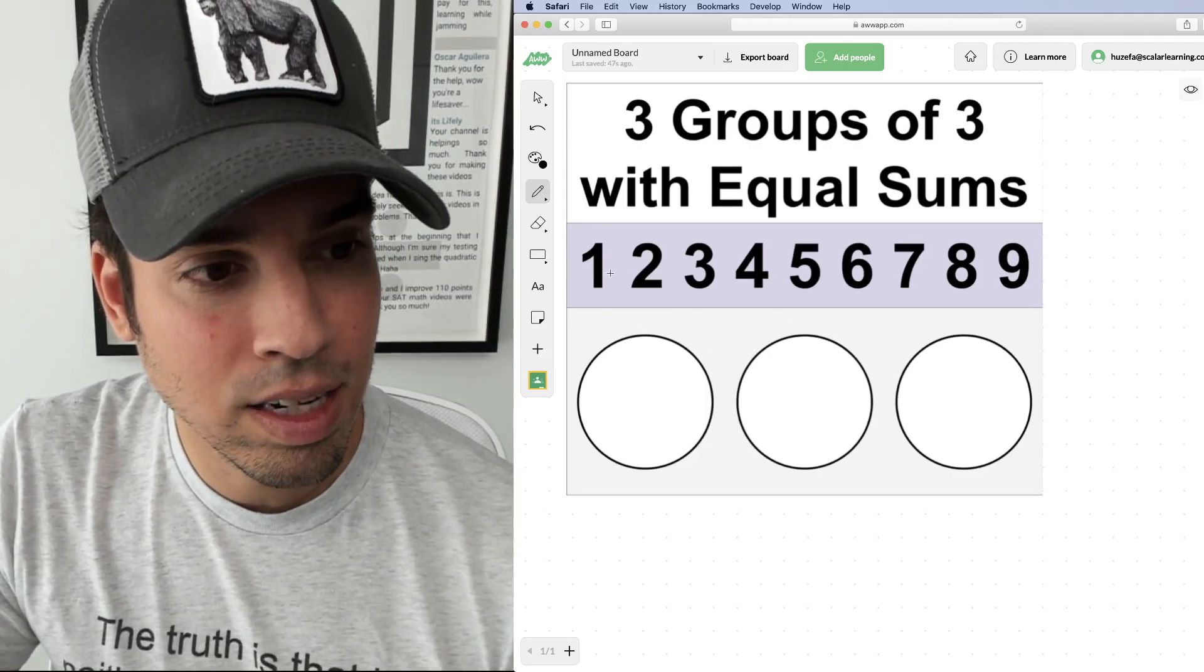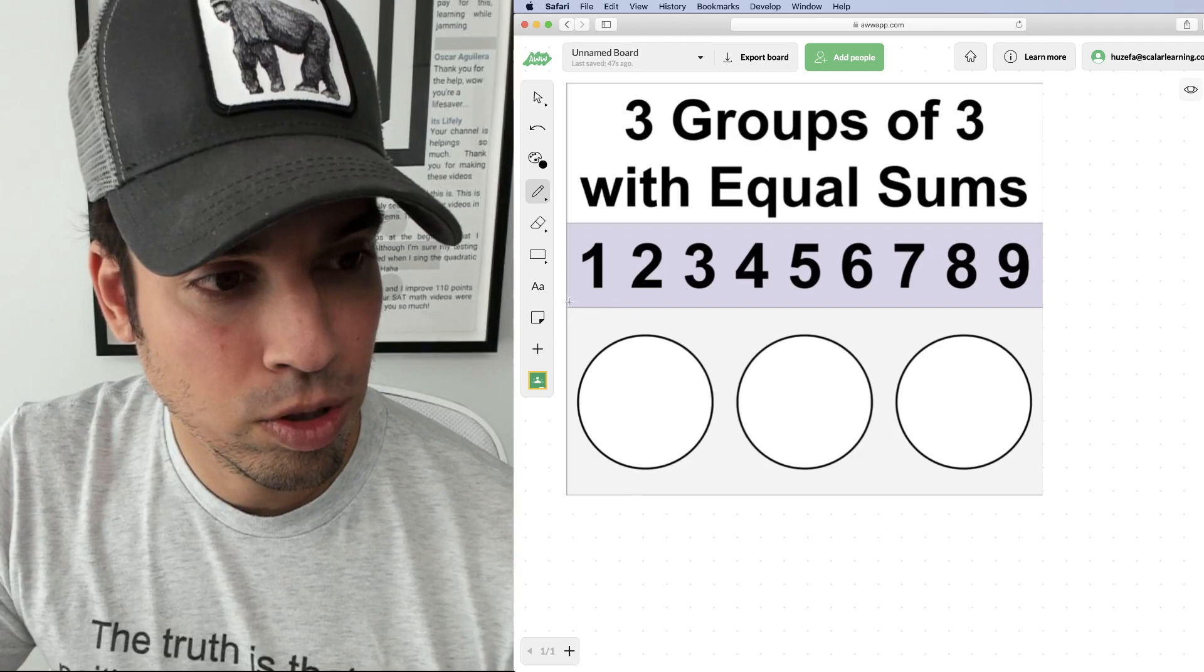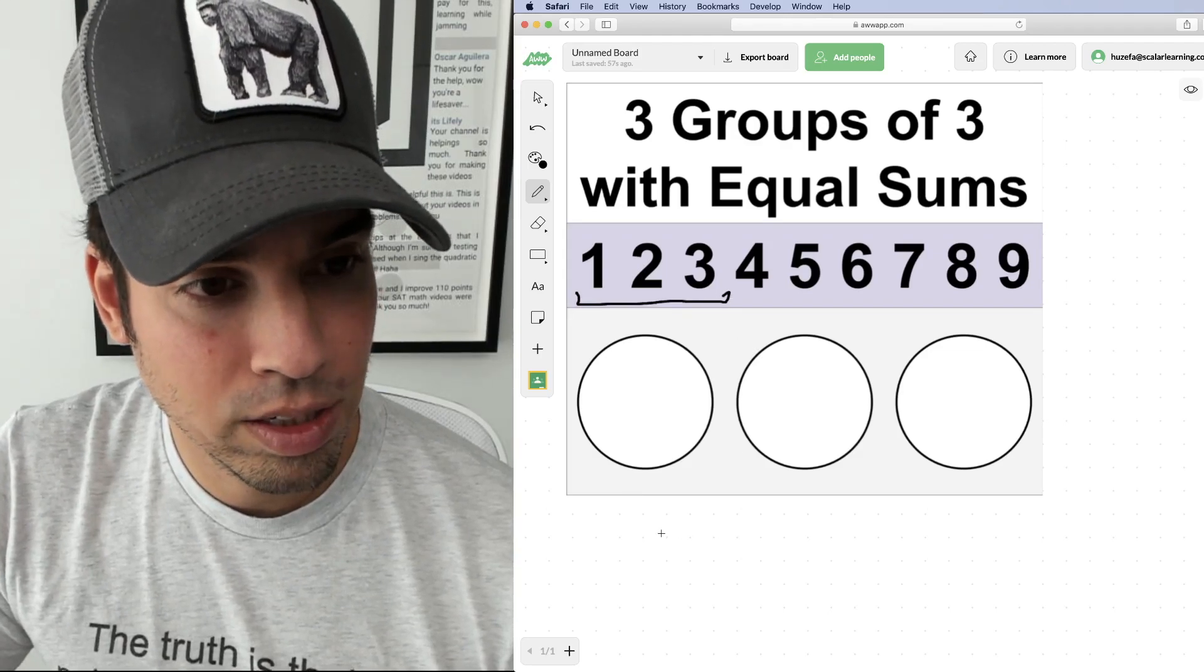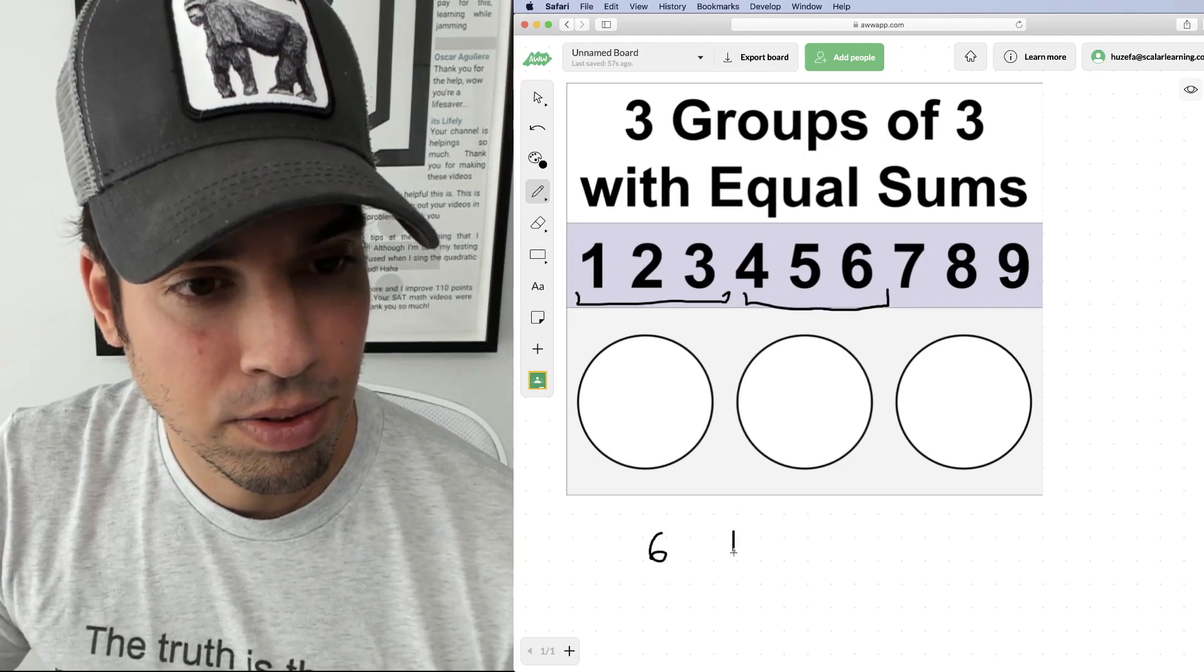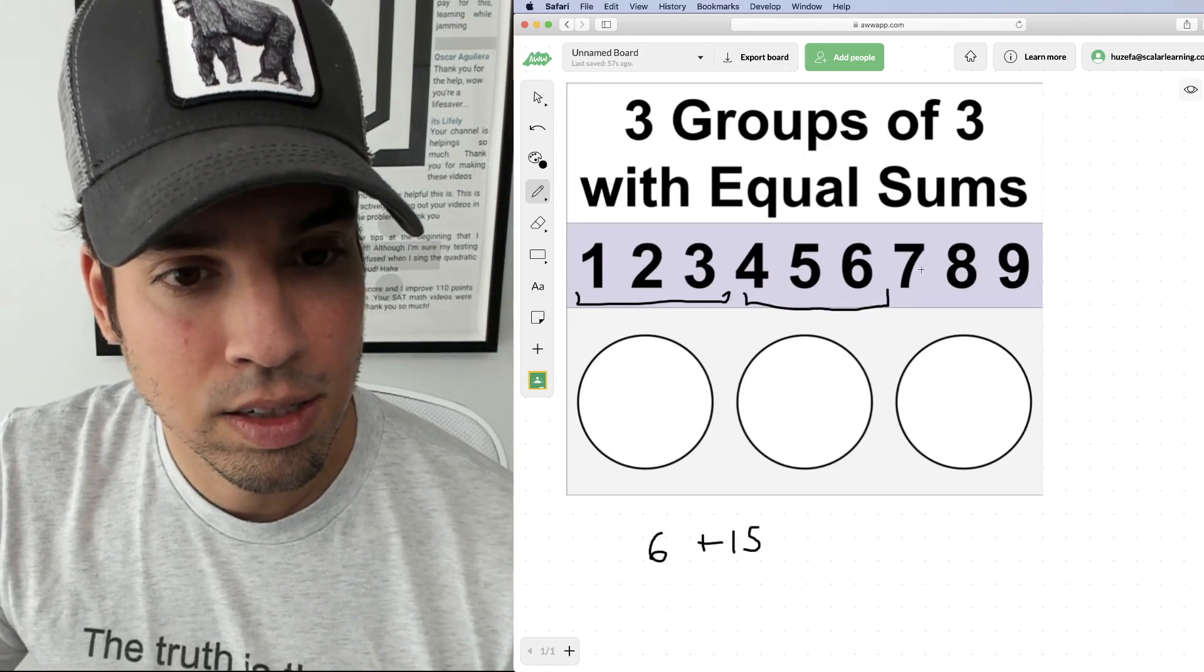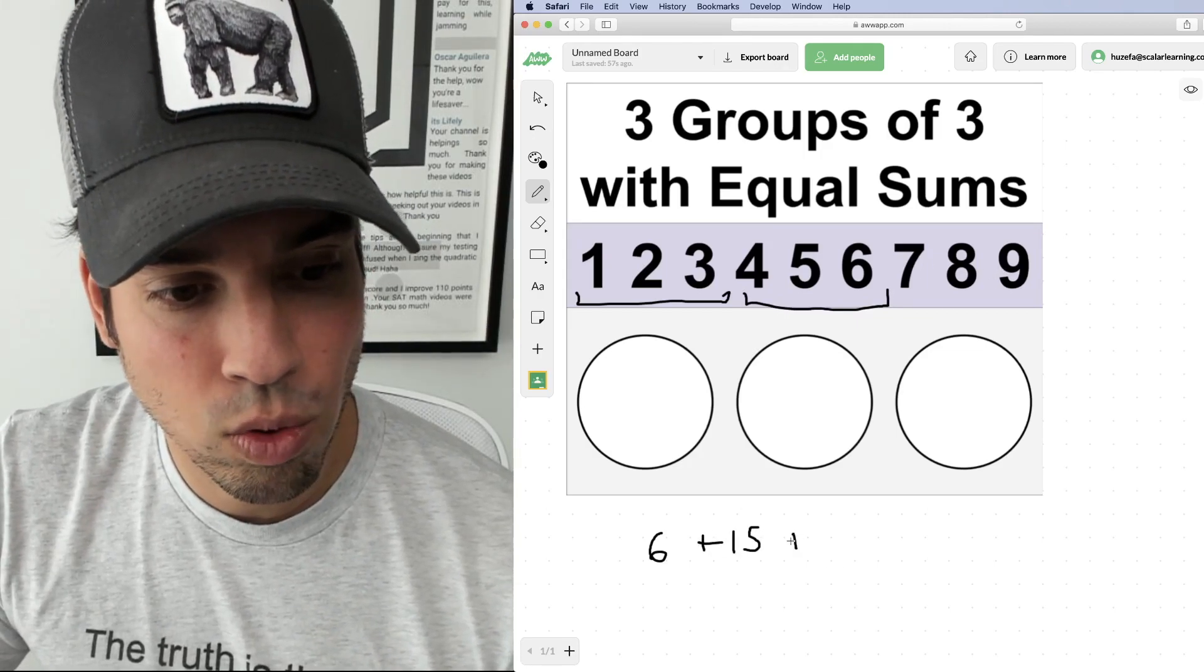So we can add these guys up. I'll sort of do it in groups of three. One plus two plus three is six, like we did before. Four plus five plus six is 15. And seven plus eight plus nine is of course 24.